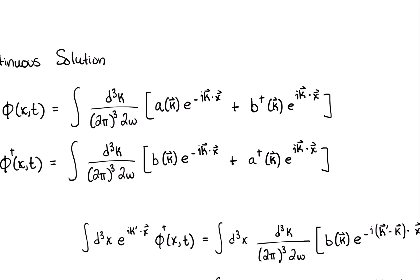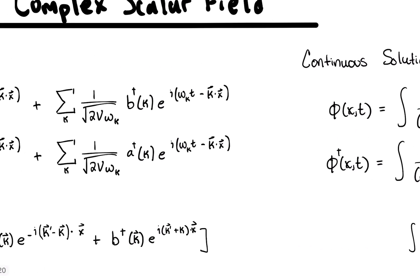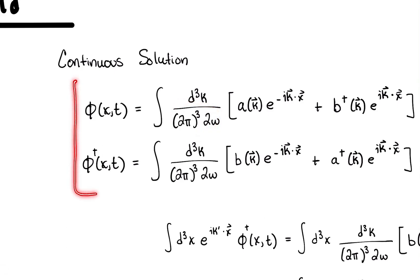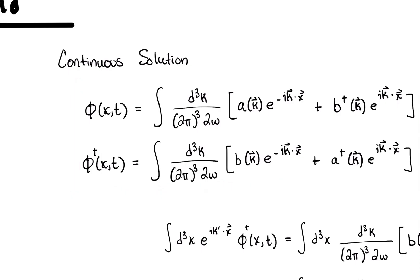We have this term here, which is somewhat analogous to the corresponding factor in the discrete case. We're going to propose that these are our continuous solutions. I'm putting this normalization factor in here to see what happens, and we'll see why it's useful to have this sort of normalizing factor in our solutions.